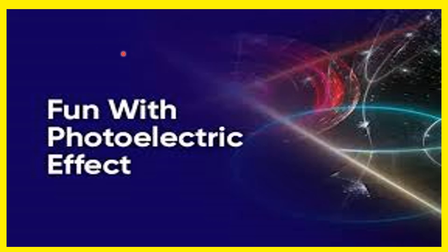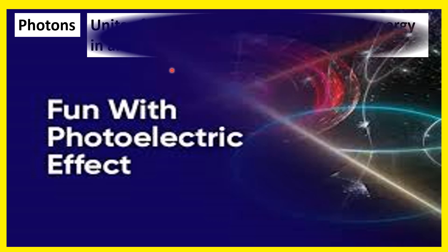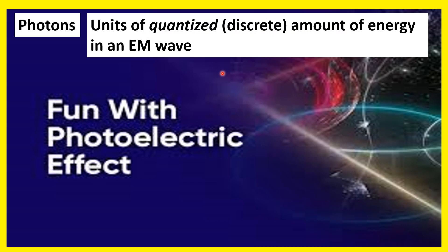Einstein's idea about the particle nature of light and all other electromagnetic waves is actually a follow-up to what a fellow scientist by the name of Max Planck had earlier discovered. Max Planck considered light to be composed of units of what they call quantized — meaning discrete amounts of energy — and they call these units of quantized or discrete amount of energy as photons.